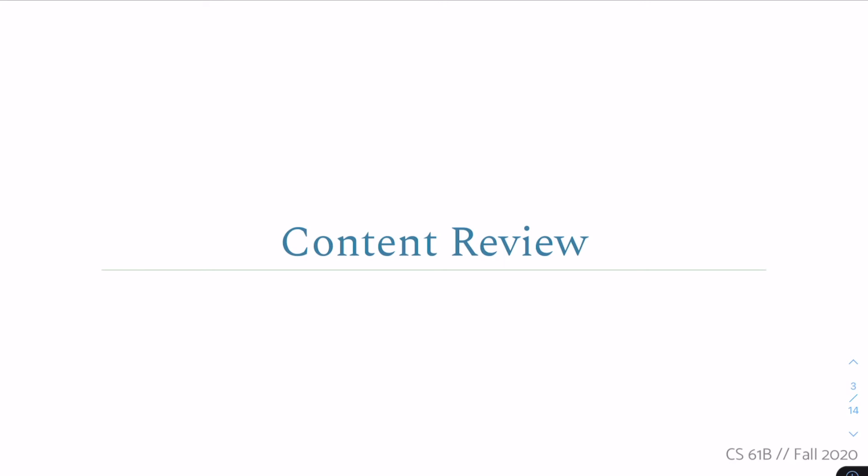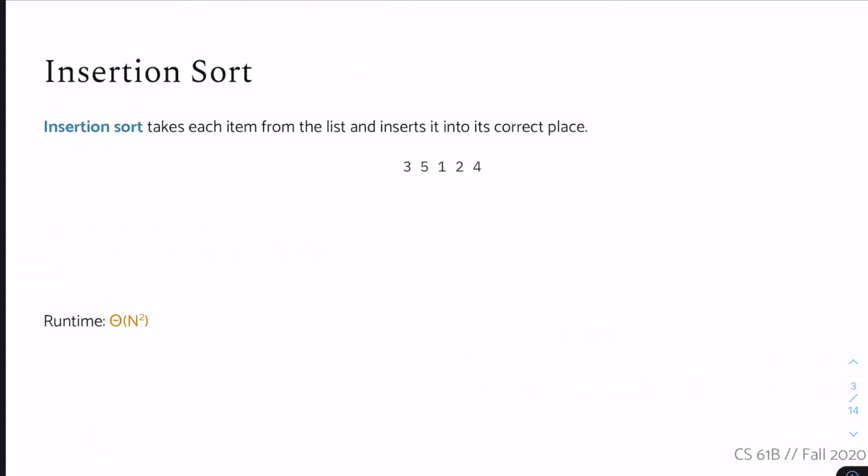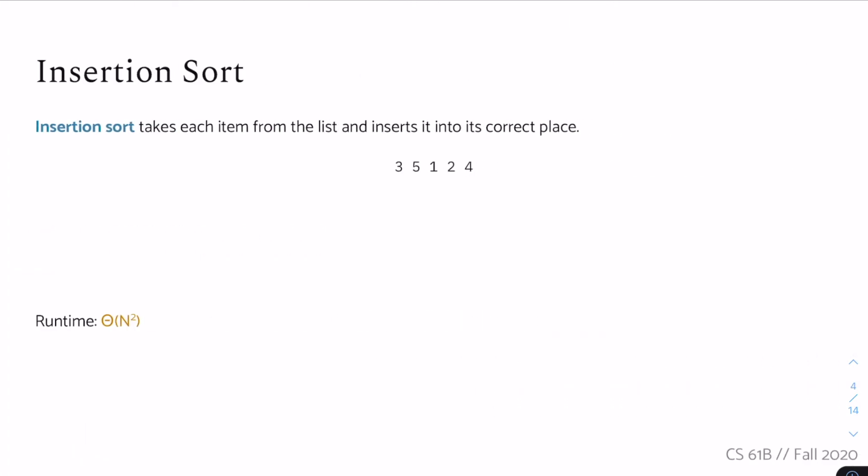Let's get into some content review. We're going to go through all four basic sorts that we've learned so far, just do a small example. The first one is called insertion sort. Insertion sort basically takes each item in order from the list and inserts it into its correct place in a sorted list.